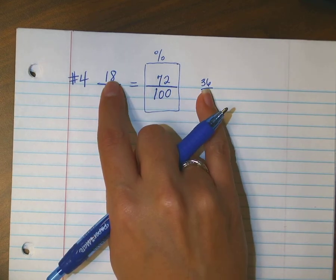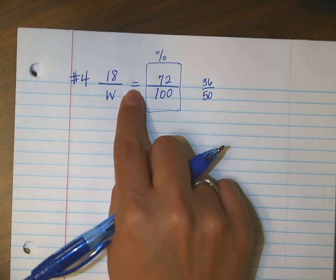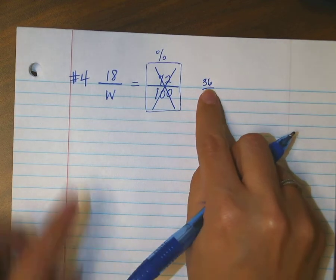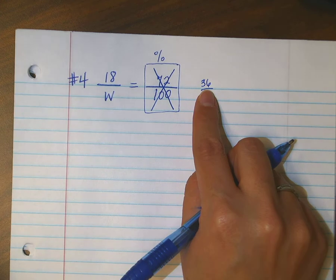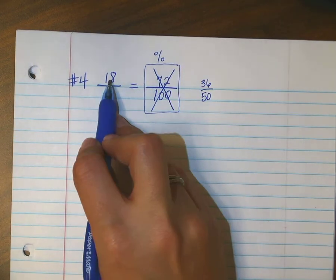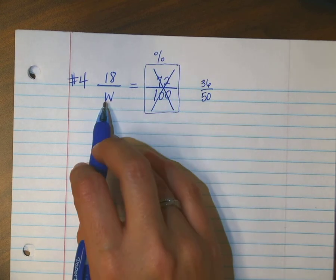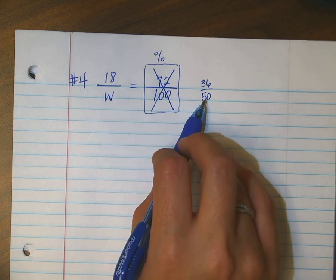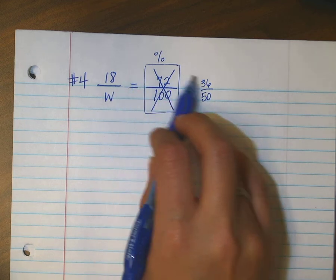Oh, I love it. So I have 18 over W equals 36 over 50. Is there a relationship? Yes. What's my scale factor going to be? Times 2. So going from here, 18, I'd be multiplying by 2 to get 36, but I kind of need to go in the opposite direction because I need to know from here, how do I get this answer?